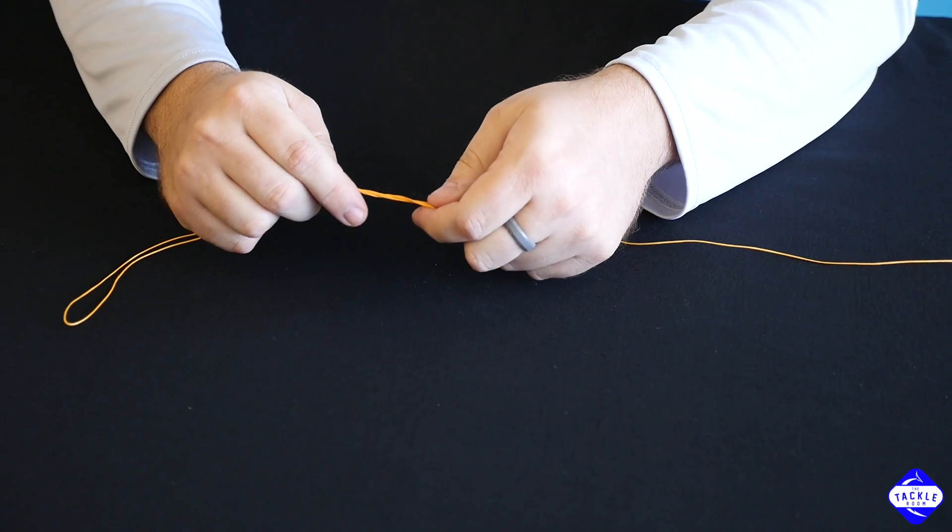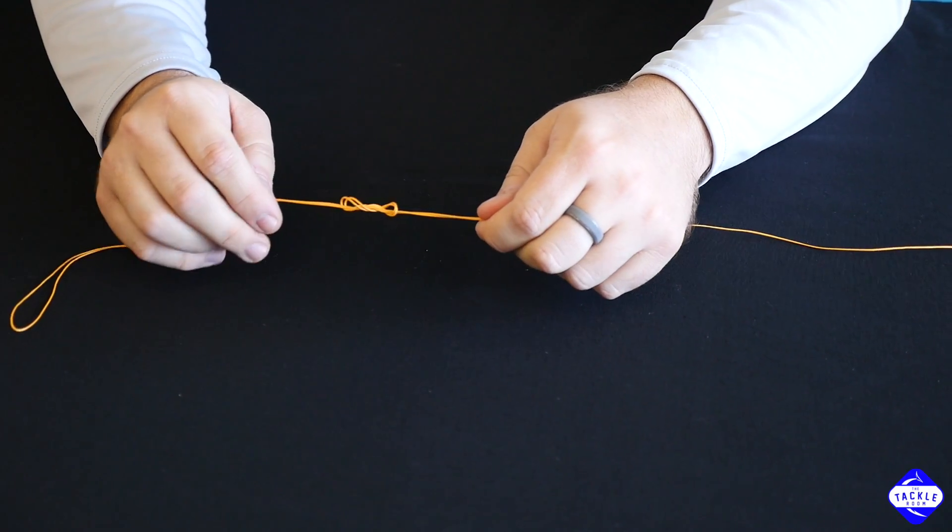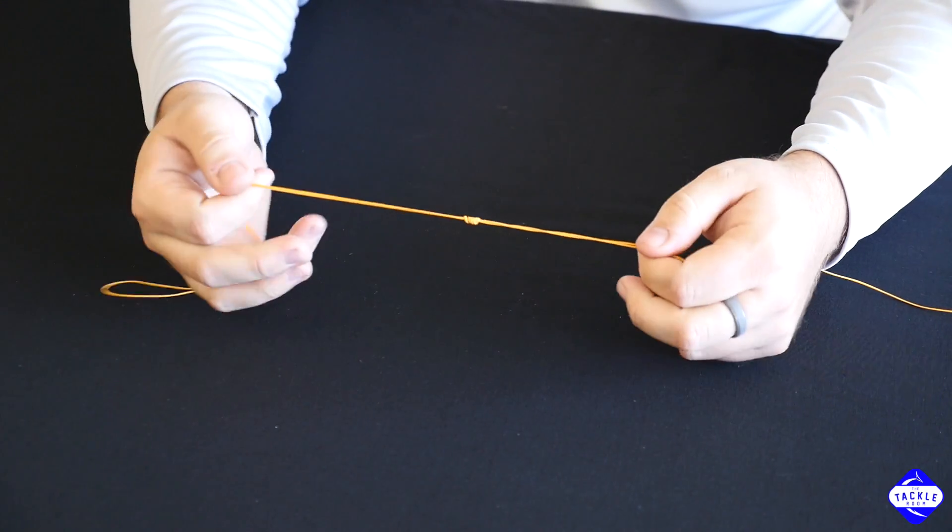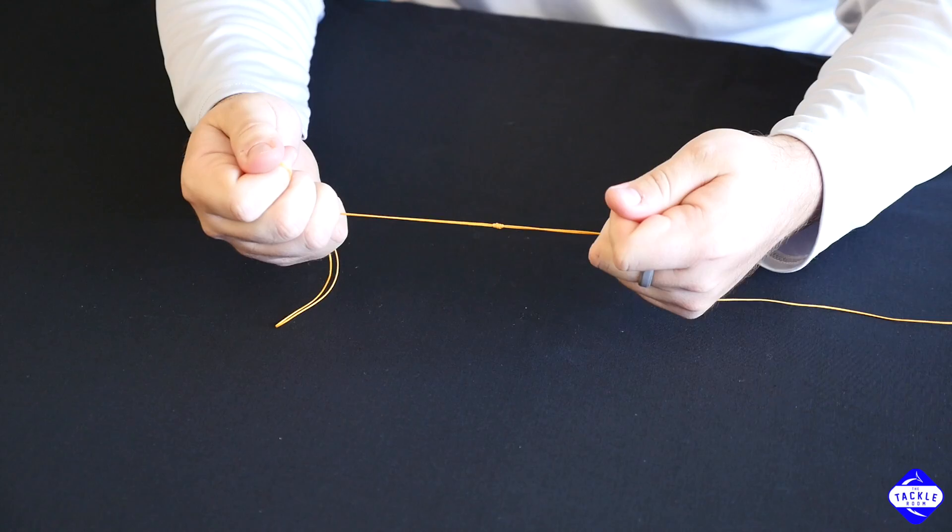Once that's through, all you have to do is slowly pull the knot down. Keep even pressure on all four pieces, two on each side. Pull that down tight.